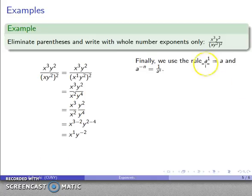And finally, I want to use the rule a to the power 1 is the same as a. a to the power minus n is the same as 1 over a to the n. So this expression here, this is just x. This is 1 over y squared. And again, I can do a little bit of cleanup of the fractions. This is x over y squared.